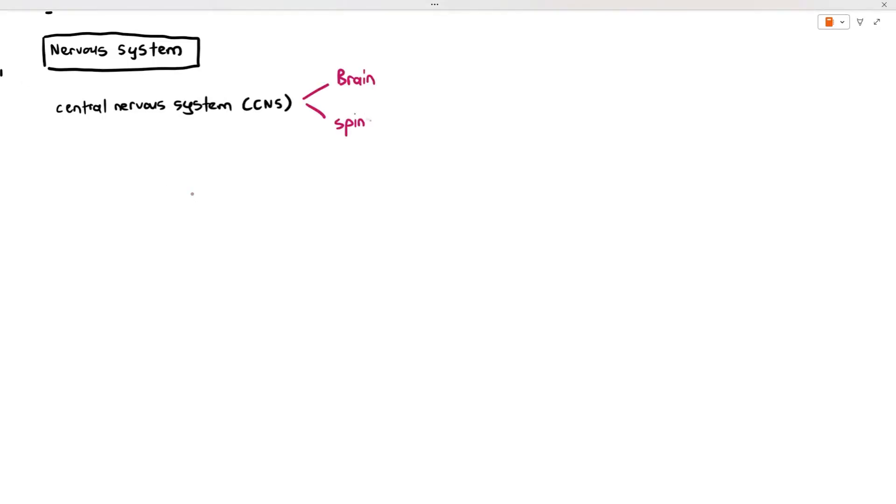Your nervous system is divided into the central nervous system, which is made up of your brain connected directly to the spinal cord.